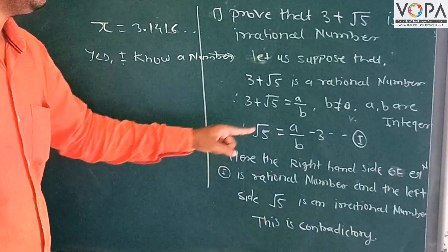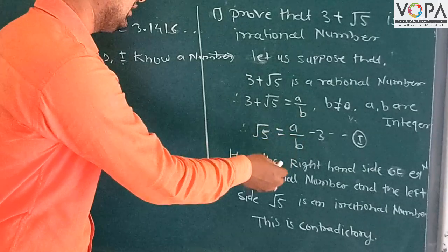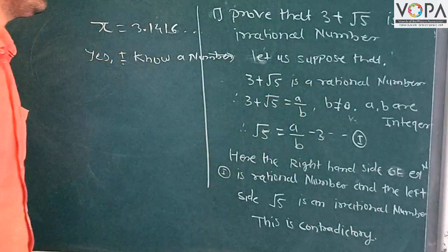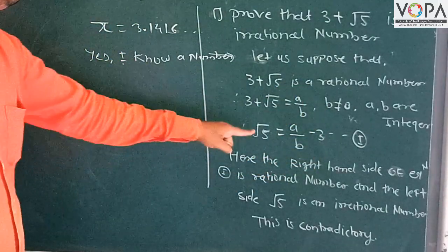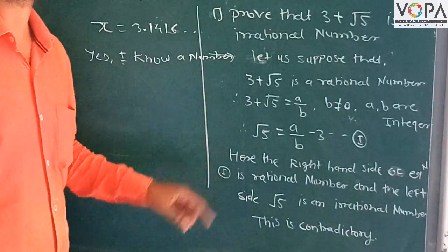But in this equation one, the right hand side of the equation is a rational number, and the left hand side, root 5, is an irrational number. This is a contradiction.